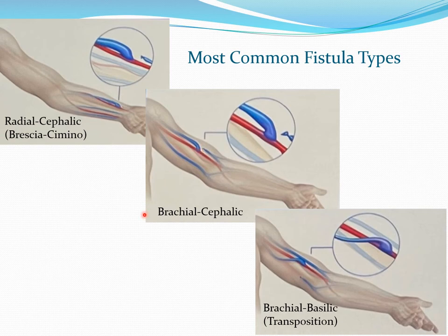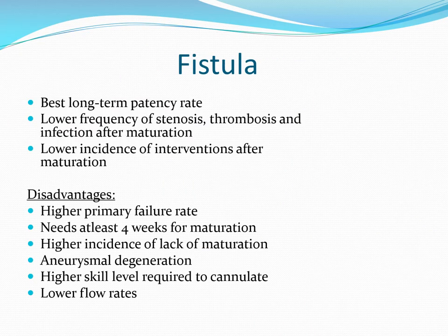The second most common fistula is brachial artery to cephalic vein in the upper arm, and the third most common is brachial artery to cephalic vein in the upper arm with transposition of the vein. Fistulas have the best long-term patency rates, with lower frequency of stenosis, thrombosis, and infection after maturation.